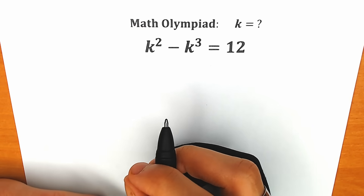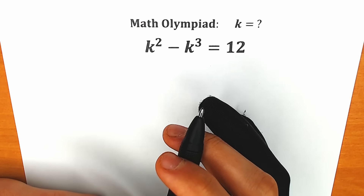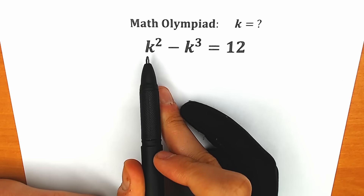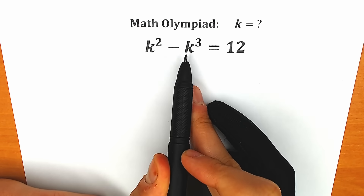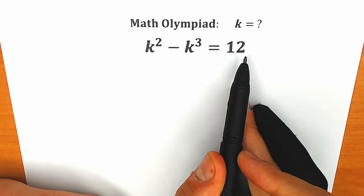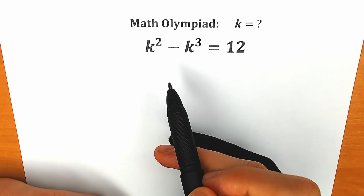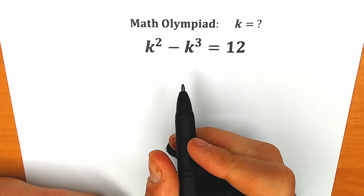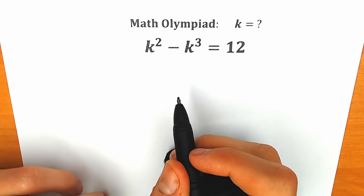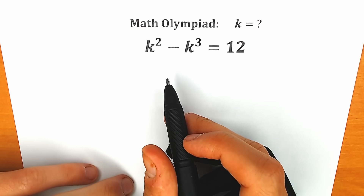Hello everyone, happy to see you here. Welcome back to my channel Higher Mathematics. Today we have a very interesting equation: k-squared minus k-cubed equals 12. We need to solve this equation for k. If you have your answer, your approach, your assumption, you can write it in the comments below and then we will check the answers.